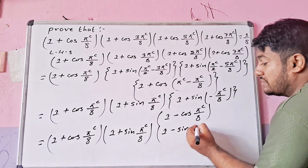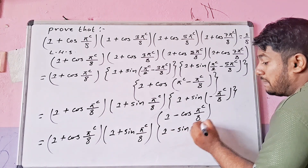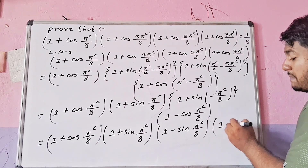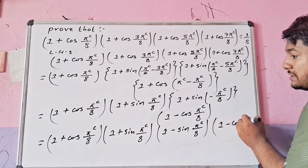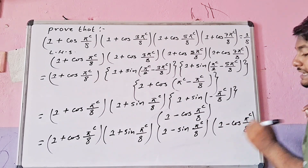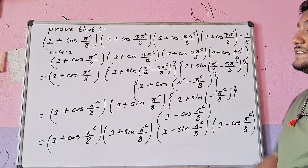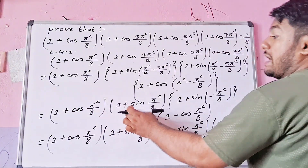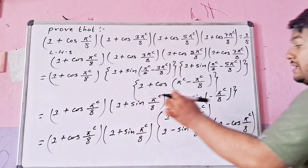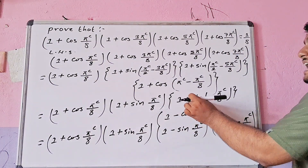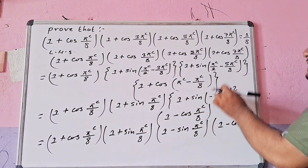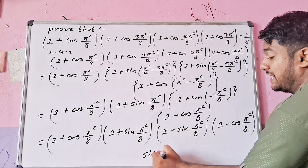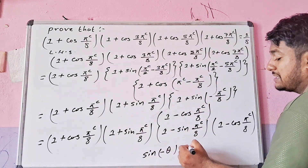We now have terms involving sin(π/8). We pair (1 + sin(π/8)) with (1 − sin(π/8)), and the expression becomes a product of two such pairs.